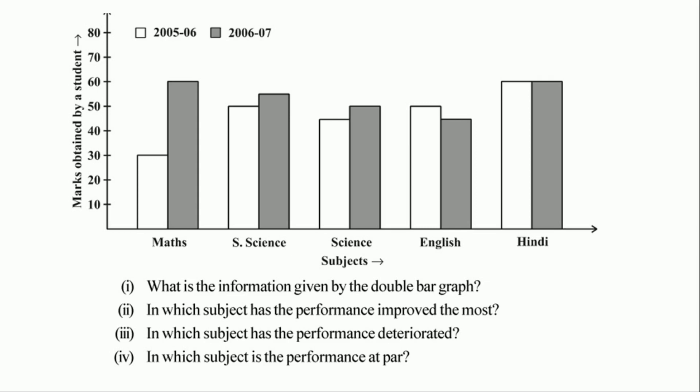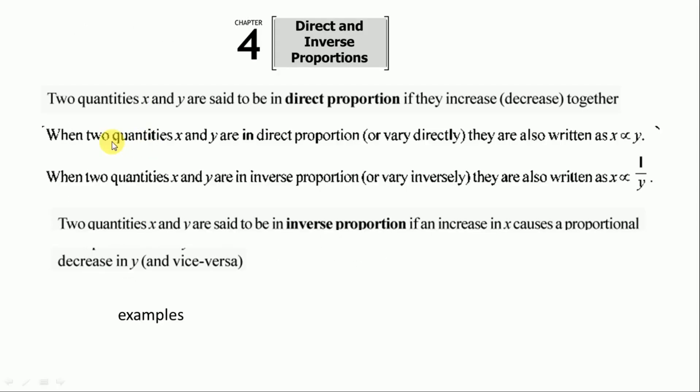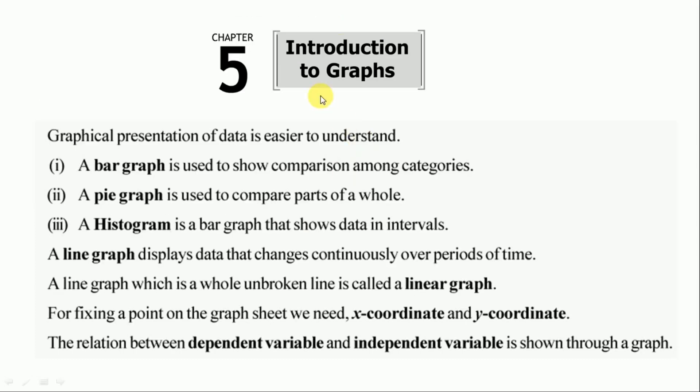Next is chapter direct and inverse proportions. All the important points are given here. Next is chapter 5, introduction to graphs. Definition of graphs are given: the bar graph, the pie graph, what is the histogram. All important points are given.